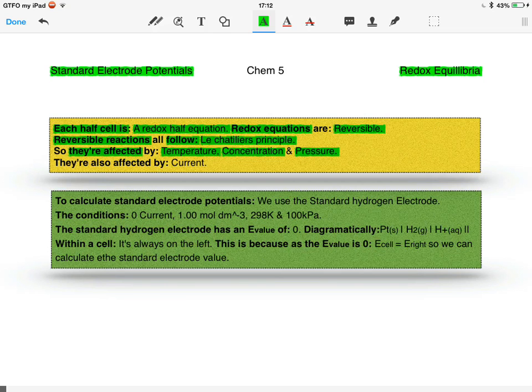Half cells are also affected by current, and that's because it's a flow of electrons, which is electricity. Obviously current is a factor, but you don't need to know much detail about that.